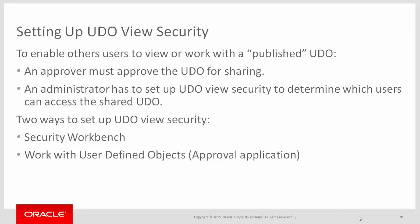The other view security form is accessible from the WorkWithUserDefinedObjects application, which is used to approve or reject UDOs submitted for sharing. If authorized, the same person responsible for approving UDOs can in tandem access a view security form to authorize users to use the shared UDOs. However, with this form you can only set up view security for individual UDOs, not all UDOs of a particular type. The benefit is that you can authorize someone other than a system or security administrator — a power user — to manage view security without giving them access to Security Workbench. Regardless of which form you use, the security records are reflected in both versions.